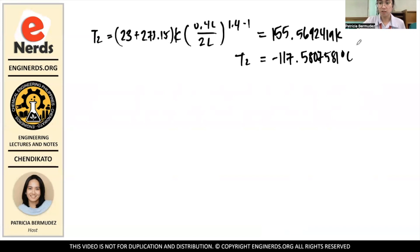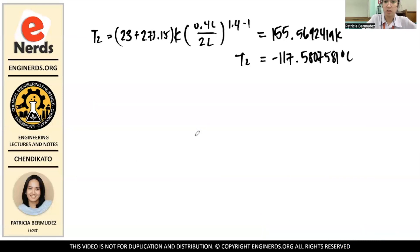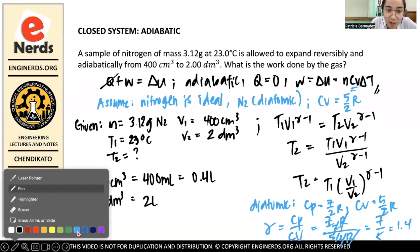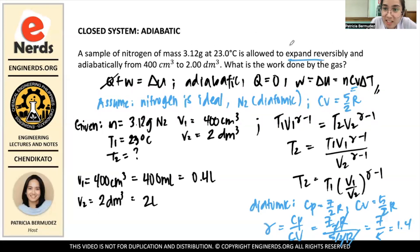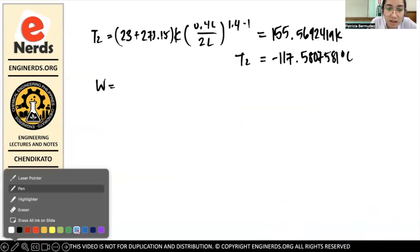Now all values are complete: mass, T1, T2, V1, and V2. The formula for work is negative nCv delta T, because this is an expansion. When gas expands, work is done by the system, so the work is negative.